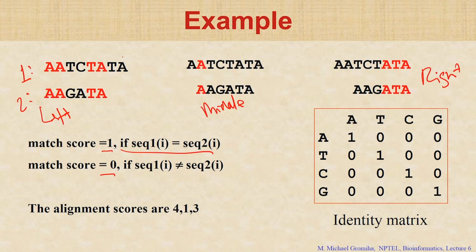In this case, if you take the first alignment, how many matches? 1, 2, 3, 4 matches. So the score will be 4, because all the mismatches we put 0. So 4 plus 0 equals 4.